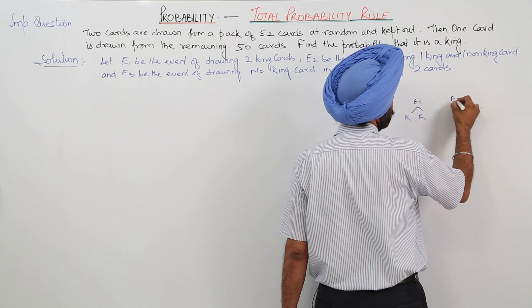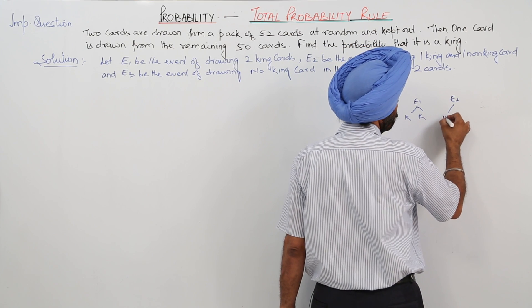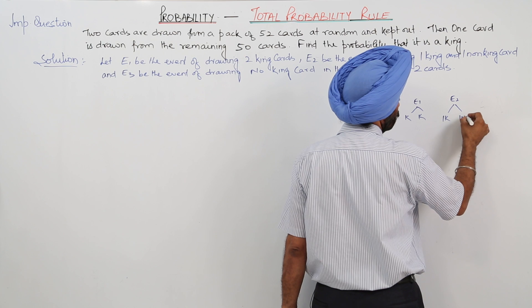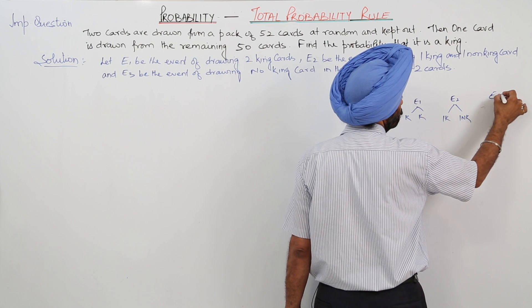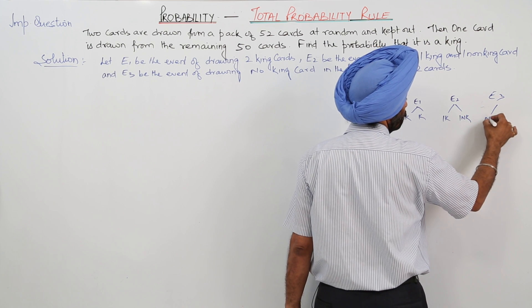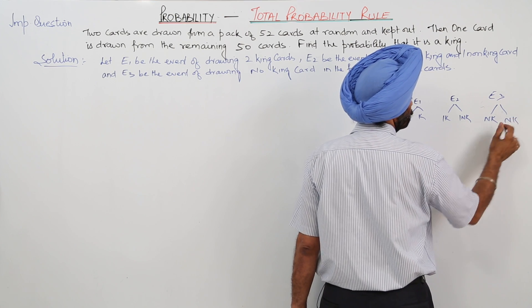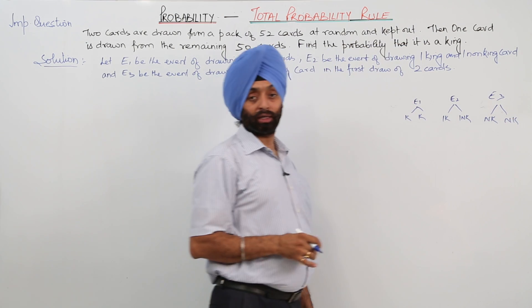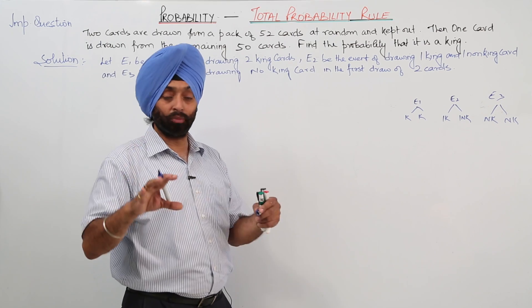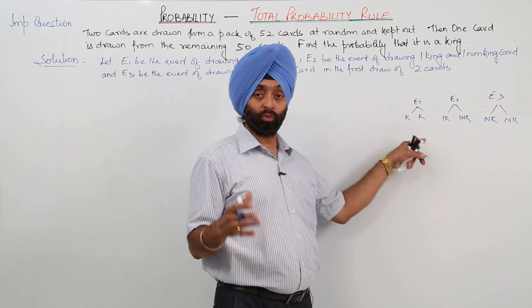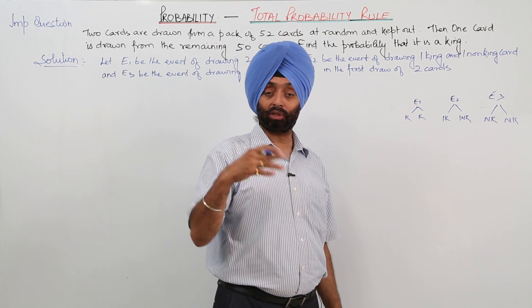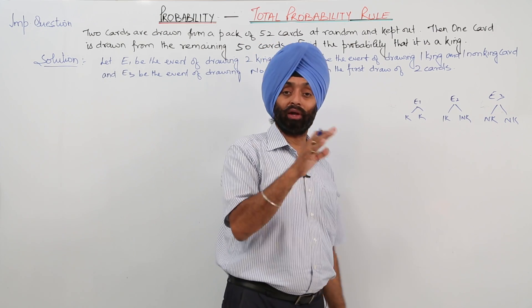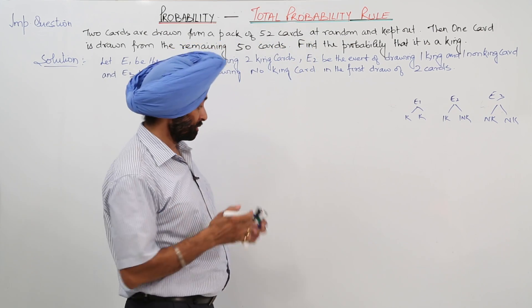Then E2 can be 1 king and 1 non-king. And then E3 we are having no king and no king. So these are basically the 2 cards. So only this is the possibility that either both can be the kings, either both can't be the kings, or either one can be the king and one can't be the king.